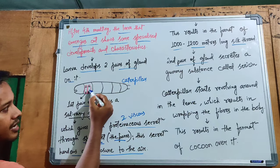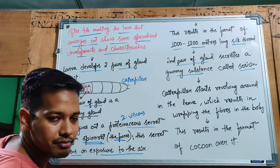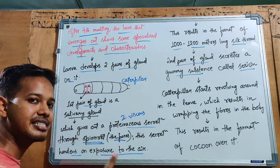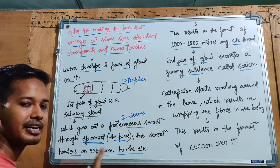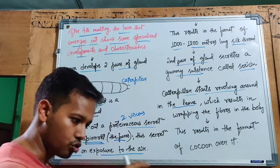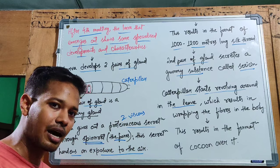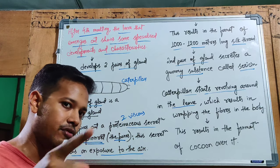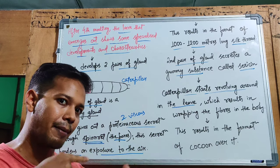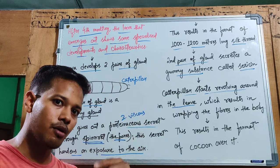The two pairs of glands release their secretions. The caterpillar starts revolving around the leaf in a zigzag manner, releasing the proteinaceous fluid which hardens on contact with air to form silk fiber. The fiber — fibroin — is coated with sericin, the gummy substance, as the caterpillar revolves and wraps the silk thread around its body.